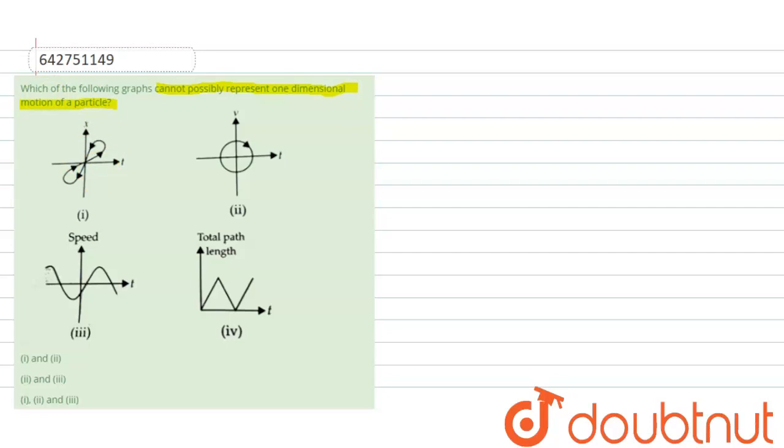So in first, at a certain instant of time, as we will see, there are two values. At a certain instant of time, the position values are two, which is not possible. So it does not or cannot possibly represent one-dimensional motion.